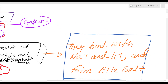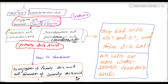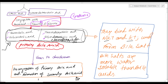These four primary bile acids bind with sodium and potassium to form bile salts. Taurocholic acid, glycocholic acid, taurochenodeoxycholic acid, and glycochenodeoxycholic acid bind with sodium or potassium to form the sodium or potassium salts of bile acid — called bile salts. Bile salts are more water-soluble, that is hydrophilic, than bile acids.